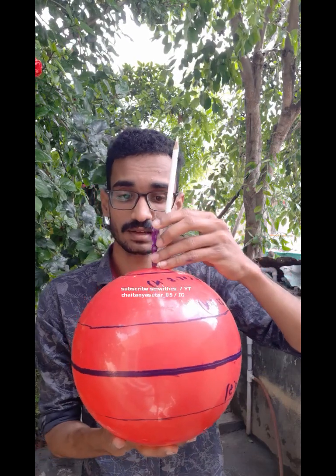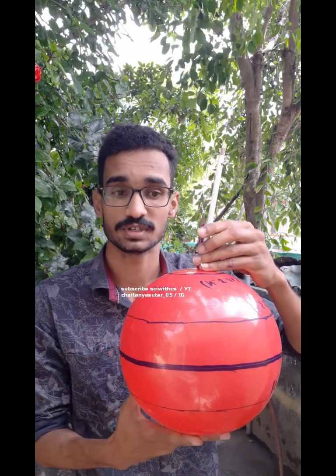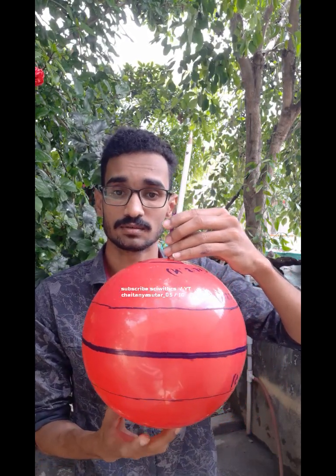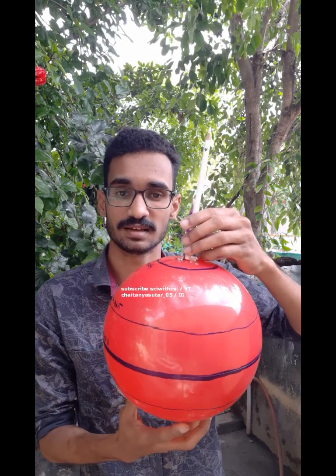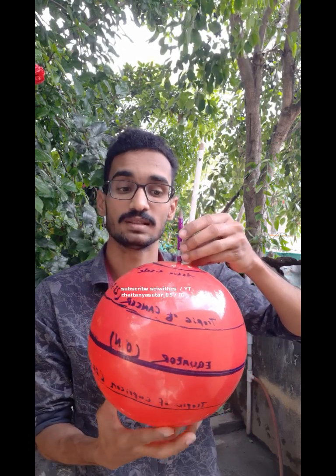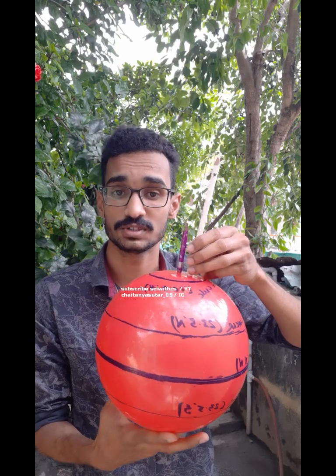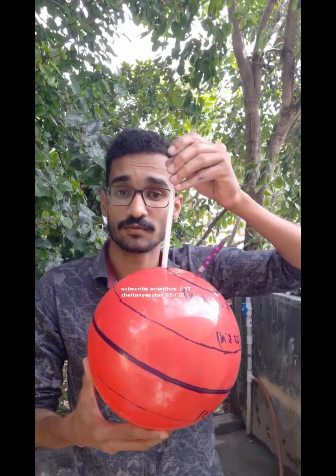Earth not only rotates around the Sun but also rotates around itself. Before the collision with the Moon, according to one theory, Earth was rolling upright around itself. But after the collision with the Moon, it got tilted around twenty-three point four five degrees from the vertical.